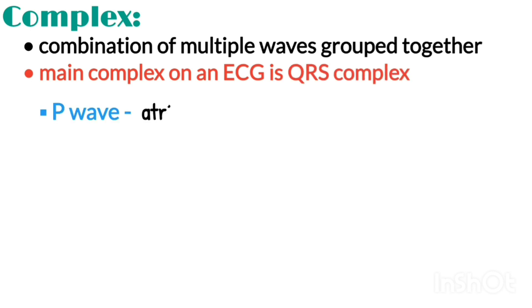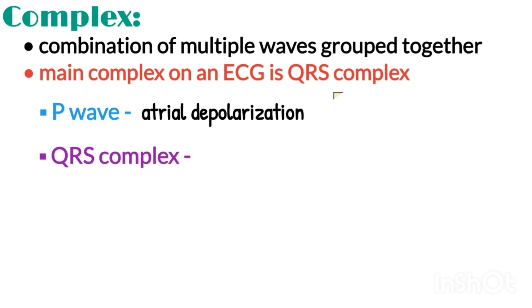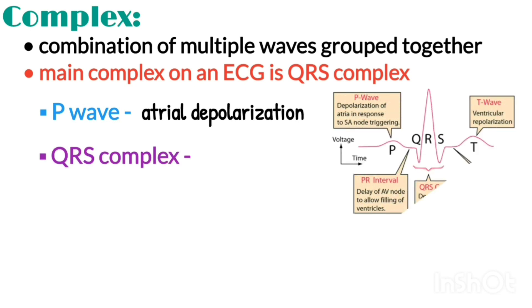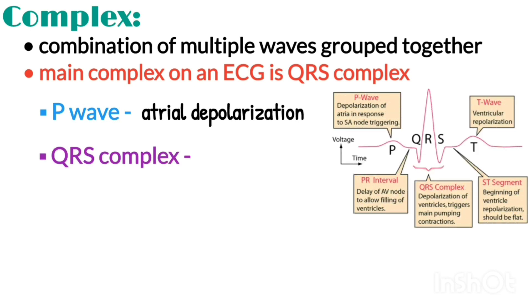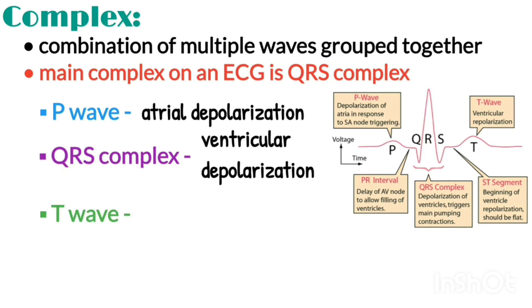The P wave indicates atrial depolarization. The QRS complex consists of a Q wave, R wave and S wave, and represents ventricular depolarization. The T wave comes after the QRS complex and indicates ventricular repolarization.